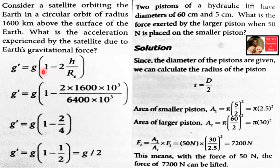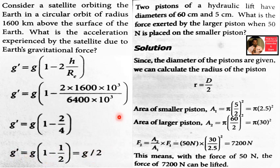G_das equals g into (1 - 2h/Re). Substituting the 2h/Re value, we calculate and find that g_das equals g by 2.